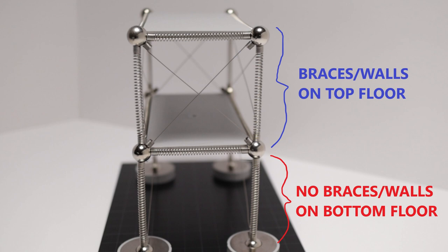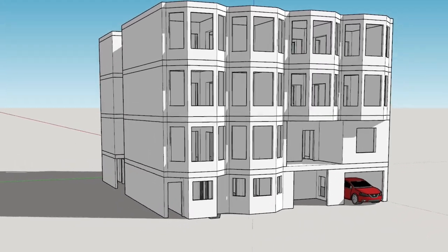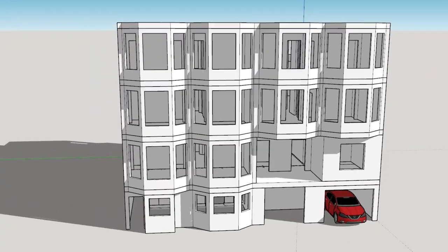So what do we do to fix or retrofit these types of soft story structures? Well, your car still needs to park under the house, so we can't add a wall or a brace, it's going to be in the way.